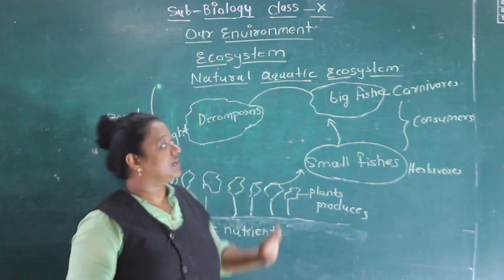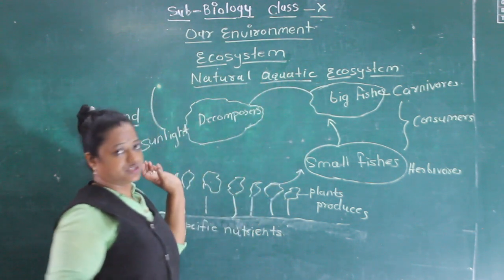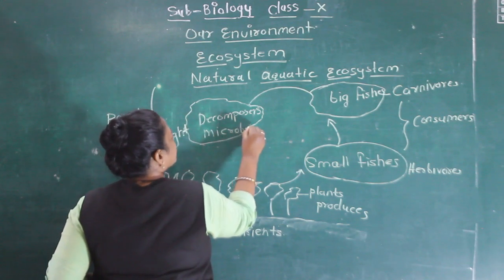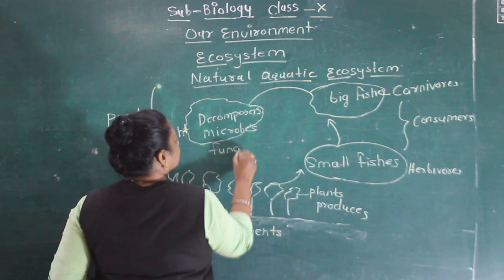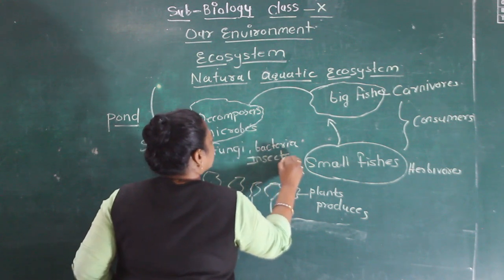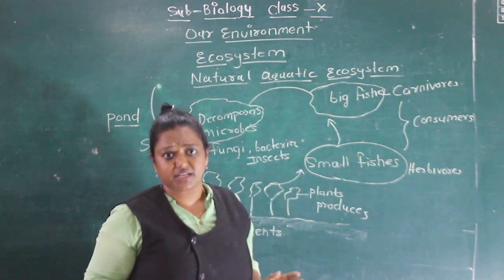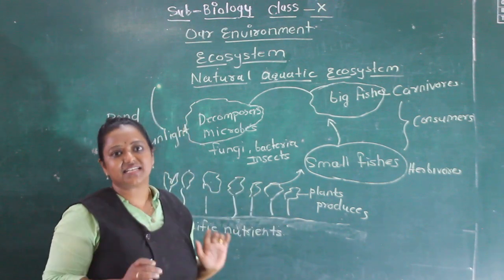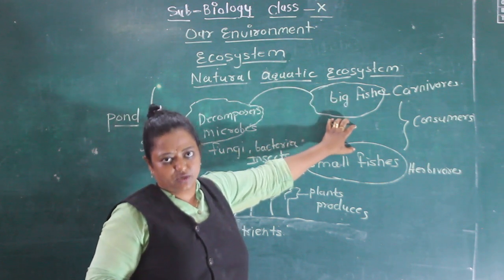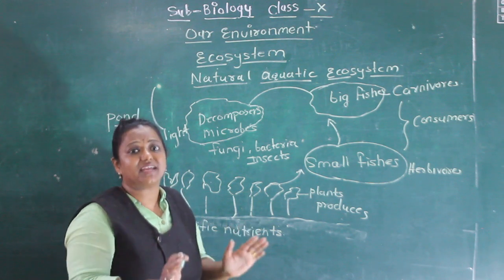Whenever they die, their dead bodies will not remain as they are in this natural aquatic ecosystem. They will be broken down by the decomposers. Decomposers include microbes like fungi, bacteria, and some insects. What these decomposers do is take the large dead bodies and synthesize them — because decomposers convert complex organic material into simple inorganic compounds.